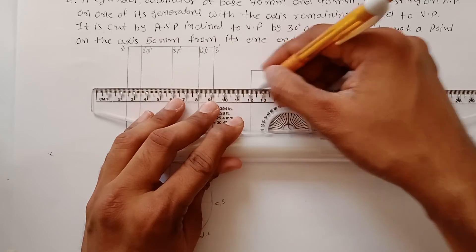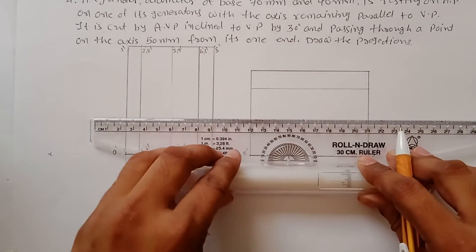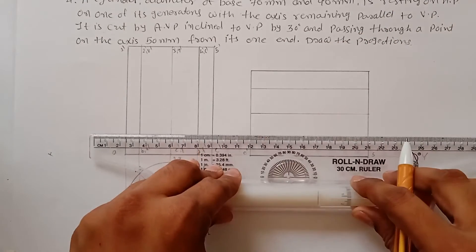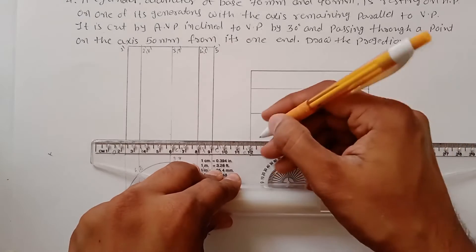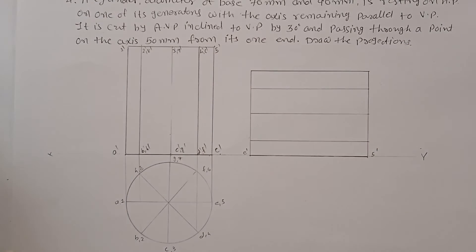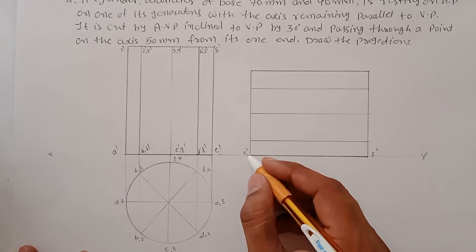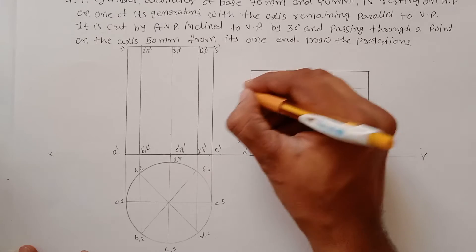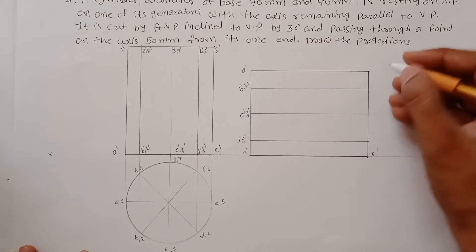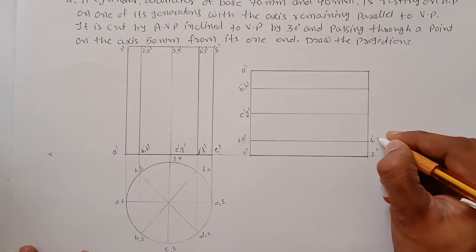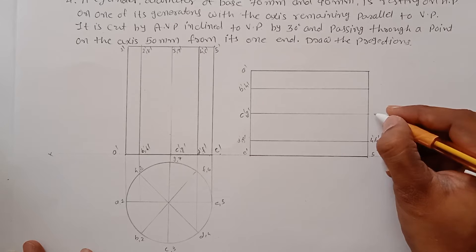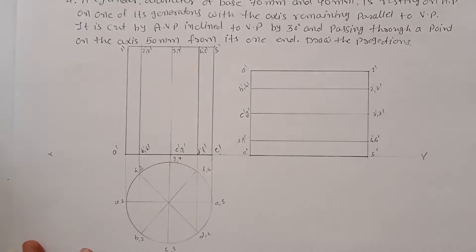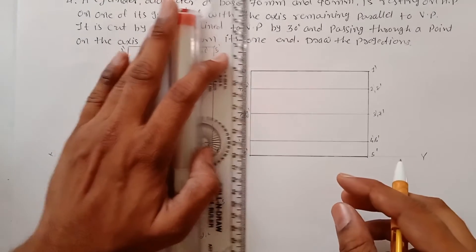This full construction is needed only to locate the generator lines — otherwise you would not get those internal points. Now write down the labels: E-dash, D-dash, F-dash, C-dash, G-dash, B-dash, H-dash, A-dash, and for the top: 4-dash, 6-dash, 3-dash, 7-dash, 2-dash, 8-dash, and 1-dash.